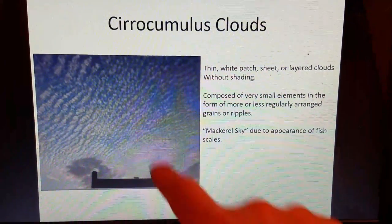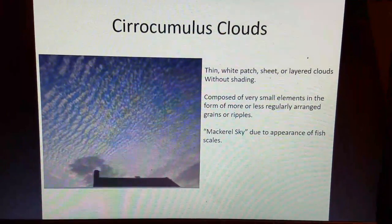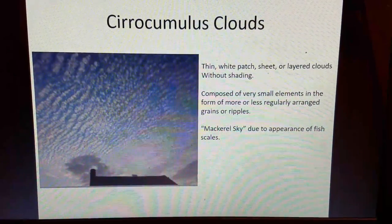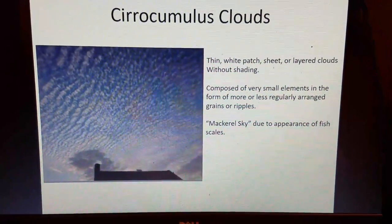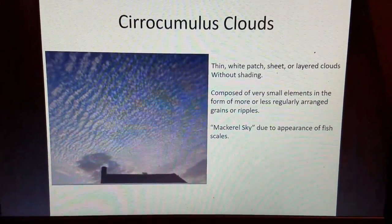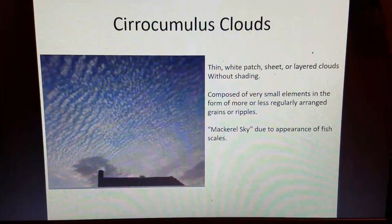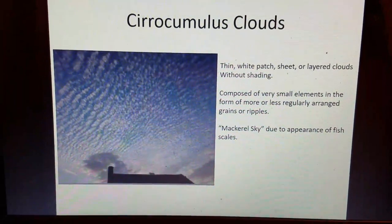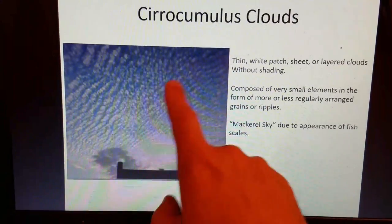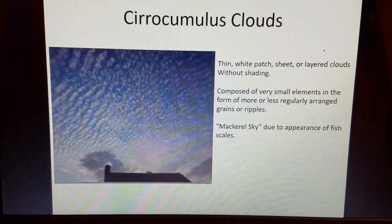Cirrocumulus clouds are thin white patches, sheets, or layer clouds without shading, composed of very small elements in the form of more or less regularly arranged grains or ripples. Cirrocumulus clouds are typically known as mackerel sky because they resemble the appearance of fish scales — if you had a fish laying on its side, you'd see that scale-like nature.